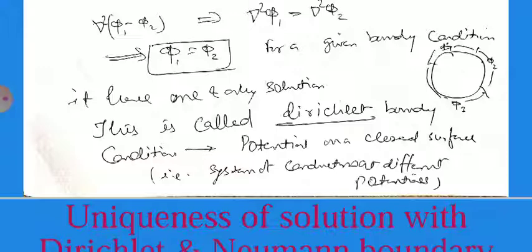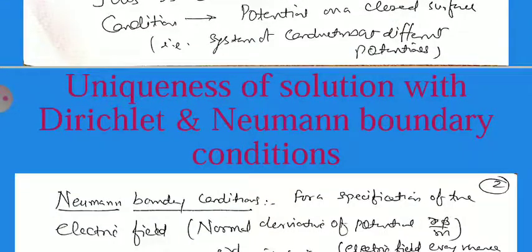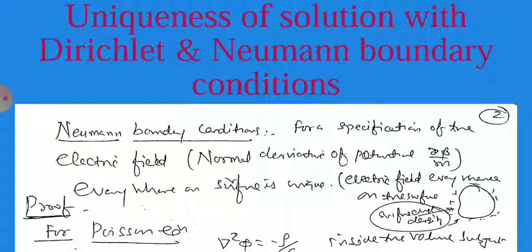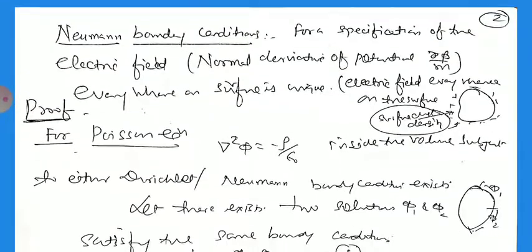This is called the Dirichlet boundary condition: the potential on the closed surface — the system of conductors at different potentials — has the same values. Next, for Neumann boundary conditions, we specify the electric field, or equivalently the normal derivative of the potential, del phi by del n, which equals minus E everywhere on the surface. The electric field is unique at every point. This is called the Neumann boundary condition.